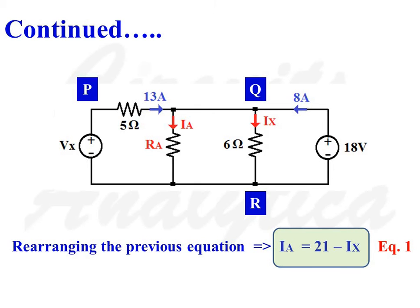Rearranging the previous equation we will get IA is equal to 21 minus IX. Equation number 1. So here 21 is the total incoming currents and IX is the current flow through 6 ohms resistor.